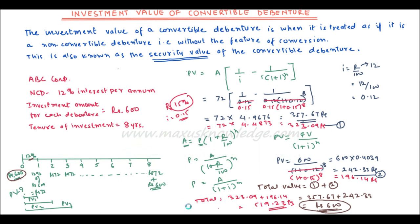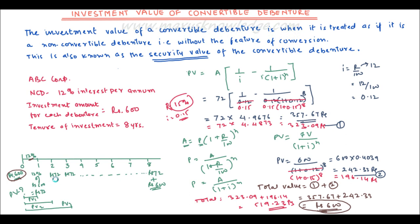As you can see, the debenture gives 12% interest, so we receive Rs. 72 annually. However, if we think we should be getting 15% because other investments offer that rate, the present value at a 15% required rate is not Rs. 600 but lower — Rs. 519. So as the required rate changes, the investment value is impacted accordingly.